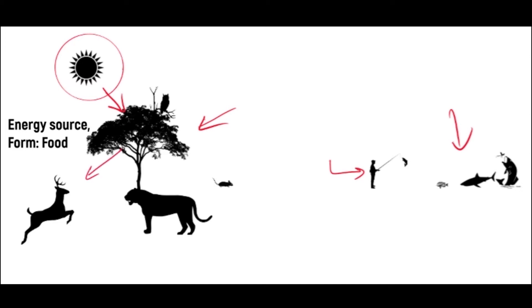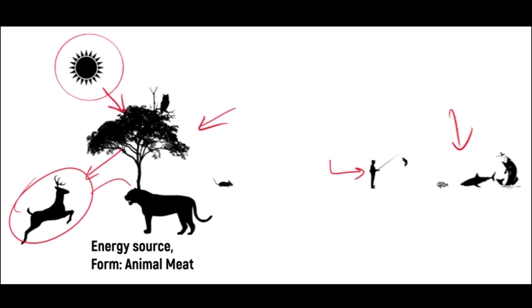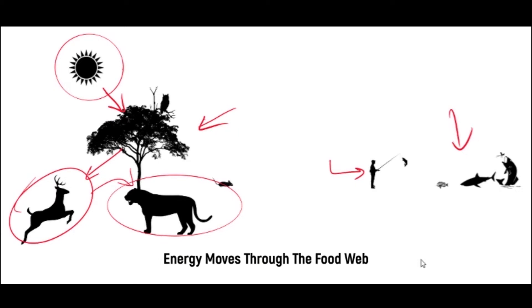Now these foods are actually energies that are transferred to animals, and later on these animals are being eaten by other animals. So as a result, we can safely say that the energy moves throughout the ecosystem through the food web.